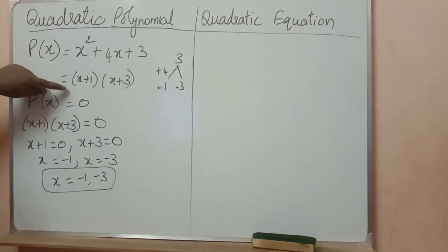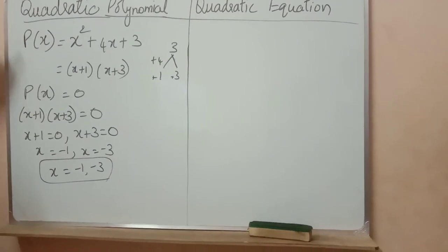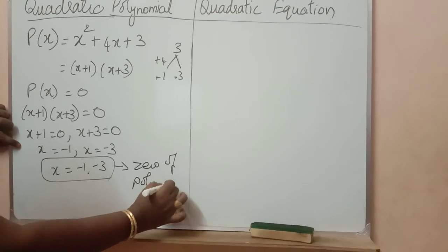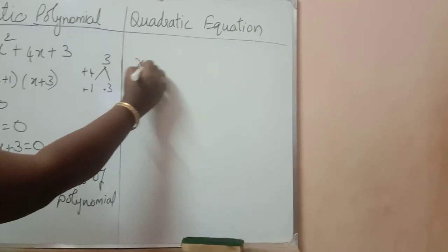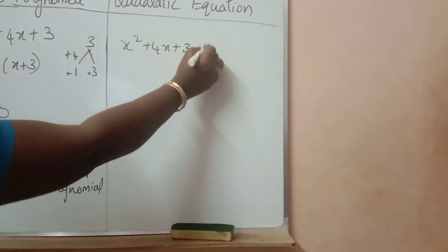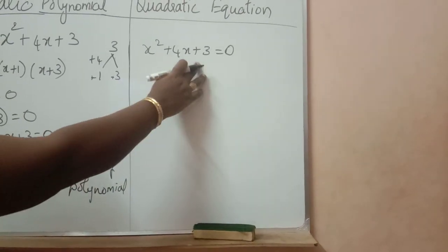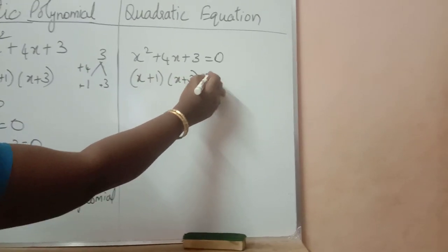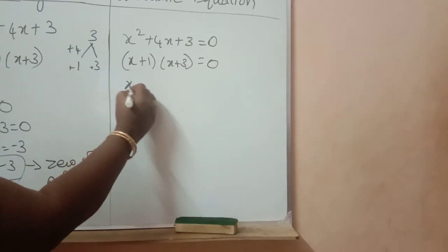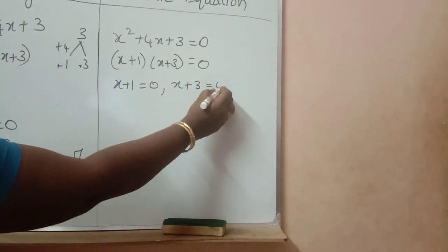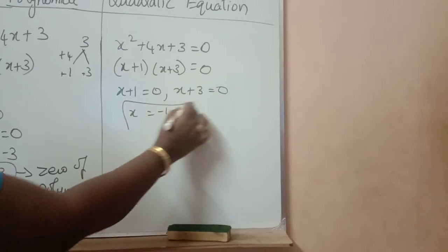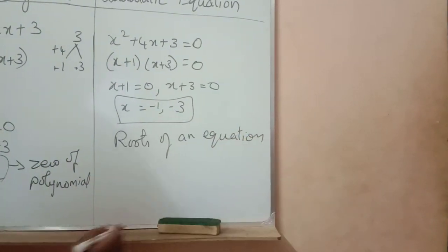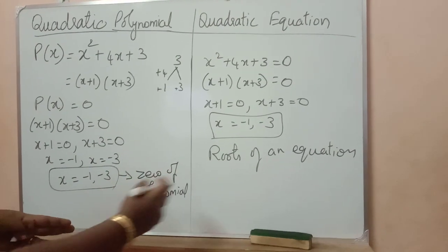When a polynomial is given, we factorize it and find the value of x. From the polynomial, if we find the value of x, it is called the zero of the polynomial. The same quadratic equation: x squared plus 4x plus 3 equal to 0 is called a quadratic equation — x squared term, x term, constant, then equal to 0. Solving by factorization: x plus 1 into x plus 3 equal to 0, so x equals minus 1 comma minus 3. These values of x are called roots of the equation.